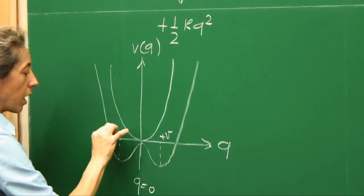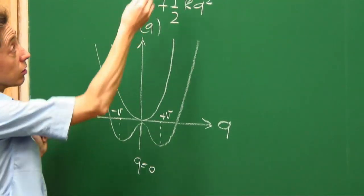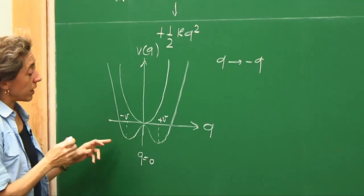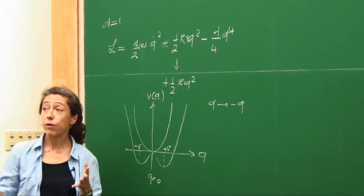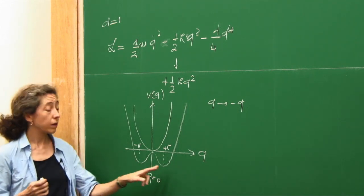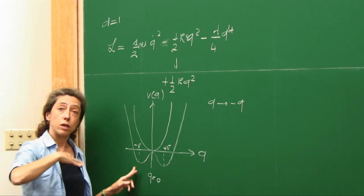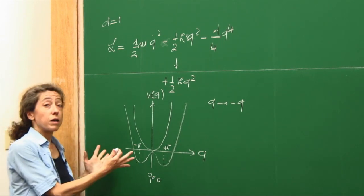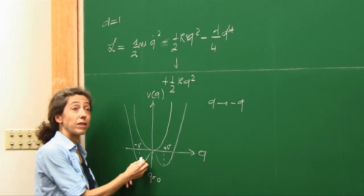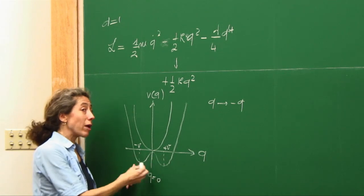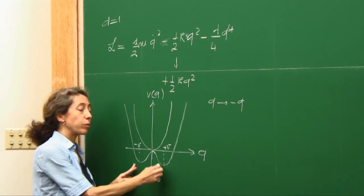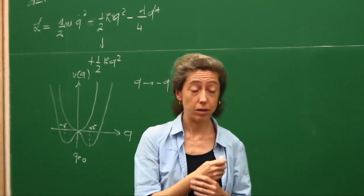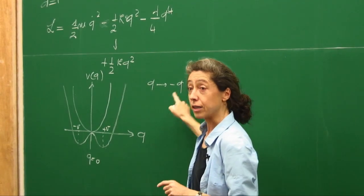The Lagrangian you wrote is invariant under q going to minus q — invariant by reflection. Your theory must be developed as an expansion about the minimum, which will be either plus v or minus v. As soon as you choose one, the reflection symmetry is broken. In quantum mechanics the situation is similar, except that you can tunnel between the two minima, so you don't necessarily have to break the symmetry. In classical field theory, the simplest thing you can do is replace q with a field phi of x.